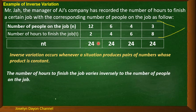So, we can say that the number of hours to finish the job varies inversely as the number of people on the job. This is a very typical example of inverse variation.